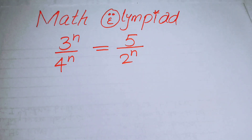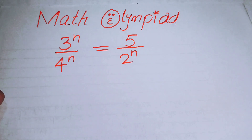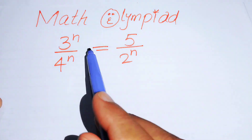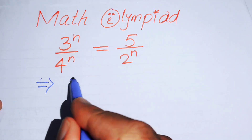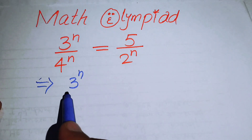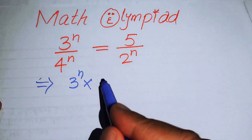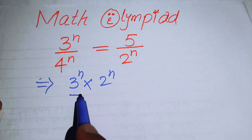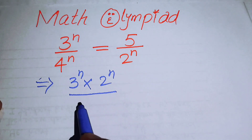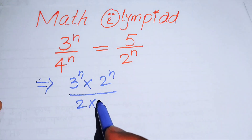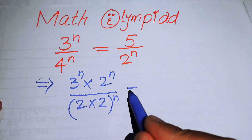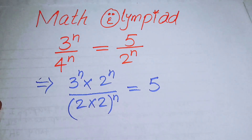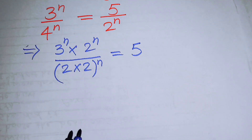The very first thing we are going to do is move 2 to the power of n to the left-hand side, giving us 3 to the power of n multiplied by 2 to the power of n. On the denominator side we will rewrite 4 as 2 times 2, raised to the whole power n, and the right-hand side will be 5.